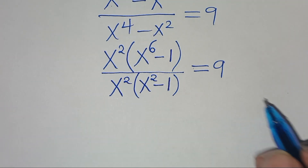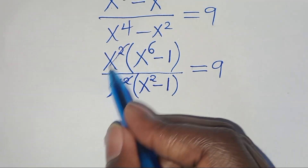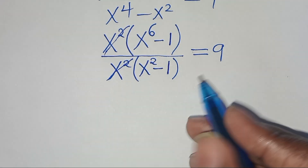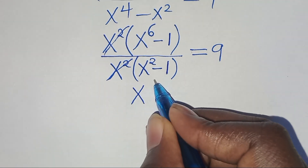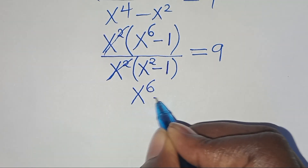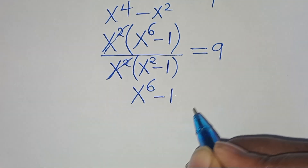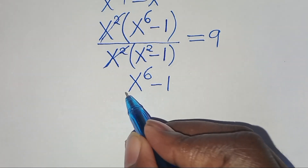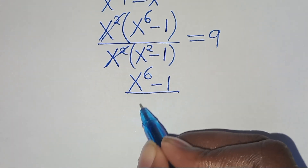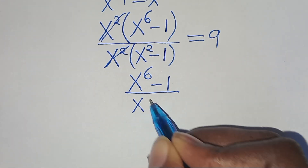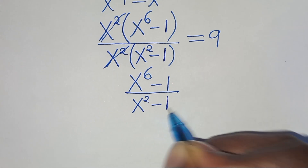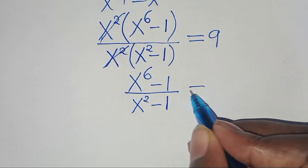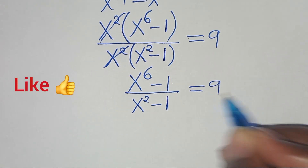So we can simplify x to the power of 2, so that now we have x to the power of 6 minus 1 in the numerator, divided by x to the power of 2 minus 1, this is equal to 9.